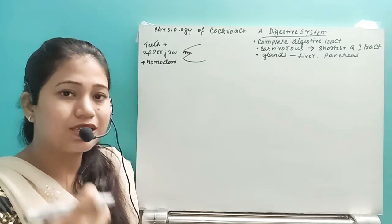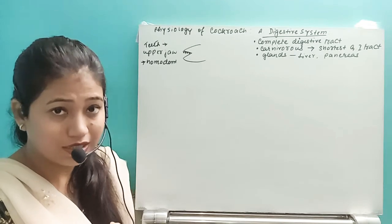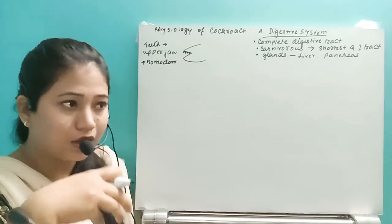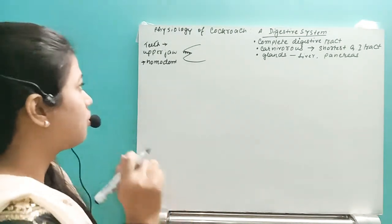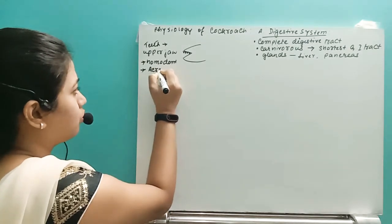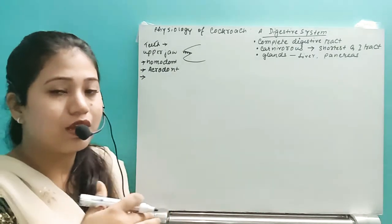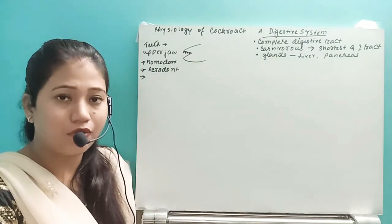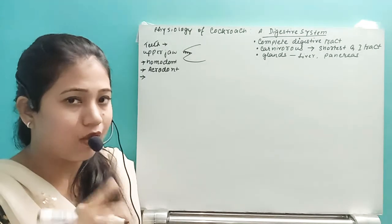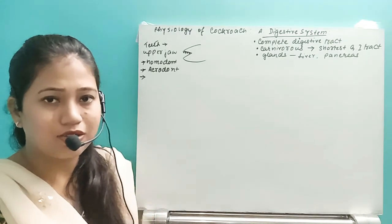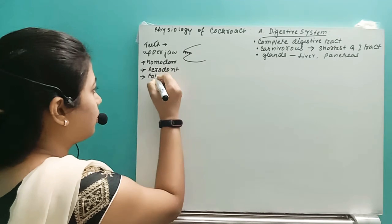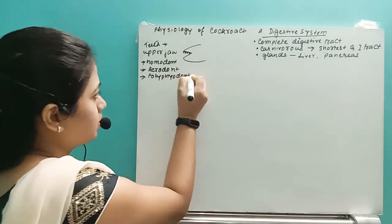The teeth are very superficially attached by fibrous connective tissue to the jaws, so every time they catch prey, two or three teeth may fall off. They are not embedded in a socket like ours. This type of teeth — just superficially attached to the jaws — is known as the acrodont type of teeth. Because of this, the teeth can fall off, but whenever they do, new ones grow.